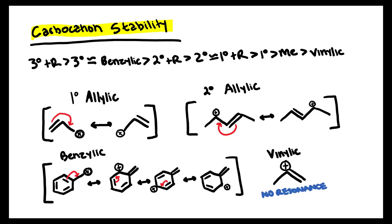If we see here an example of primary allylic or primary plus resonance, you can see that the carbocation is primary and so it is only attached to a single carbon.